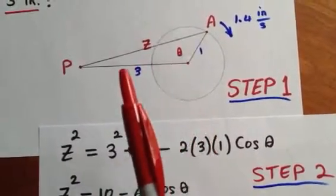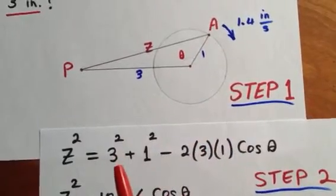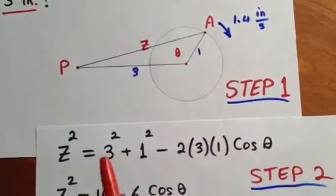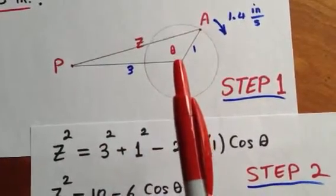z squared equals the two sides adjacent to theta, each squared, just like the Pythagorean. Up to here, it's the Pythagorean relation, only if theta was 90 degrees.